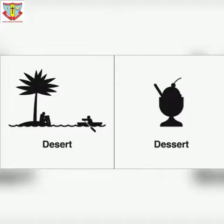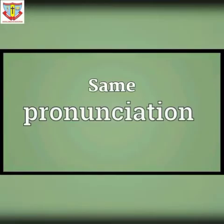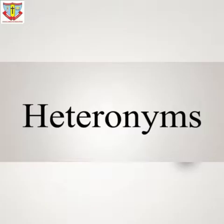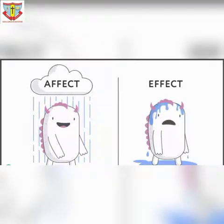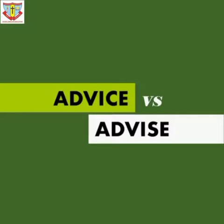Further examples of homophones: 'desert' (D-E-S-E-R-T) and 'dessert' (D-E-S-S-E-R-T). Also, 'affect' (A-F-F-E-C-T) and 'effect' (E-F-F-E-C-T). And 'advice' (A-D-V-I-C-E) and 'advise' (A-D-V-I-S-E). The pronunciation is the same but they mean different things.